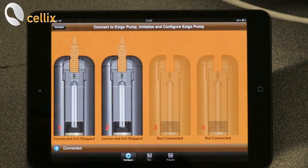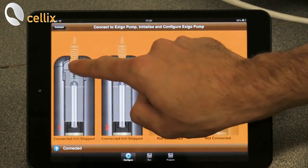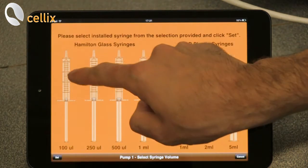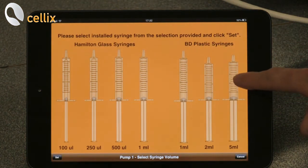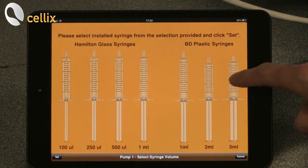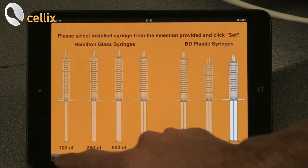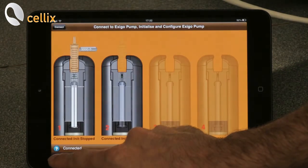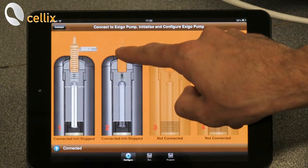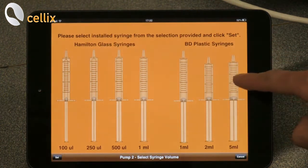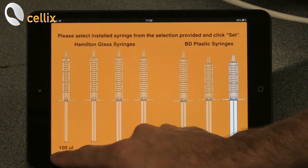The next step is to select the syringe. We double click on the syringe and we select five milliliter syringe because it's the dimension of the syringe we are currently using. Select the syringe and then set. We do the same operation for the second pump. We double click, we select the syringe and then we click set.